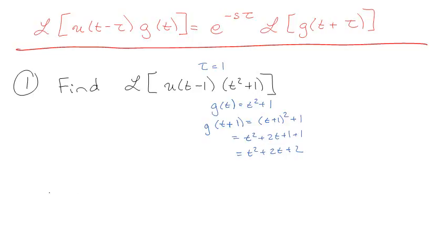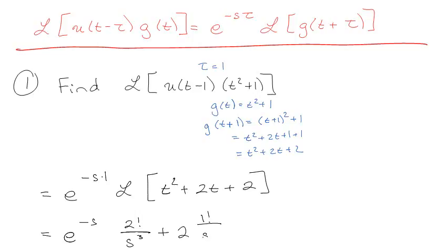So that means, essentially, I want to find e to the minus s times 1 times the Laplace transform of t squared plus 2t plus 2. e to the minus s, and the Laplace of t squared is going to be 2 factorial over s to the 2 plus 1 is 3. And then 2 times 1 factorial over s squared, and 2 times 1 over s, and that's really all there is to that one.